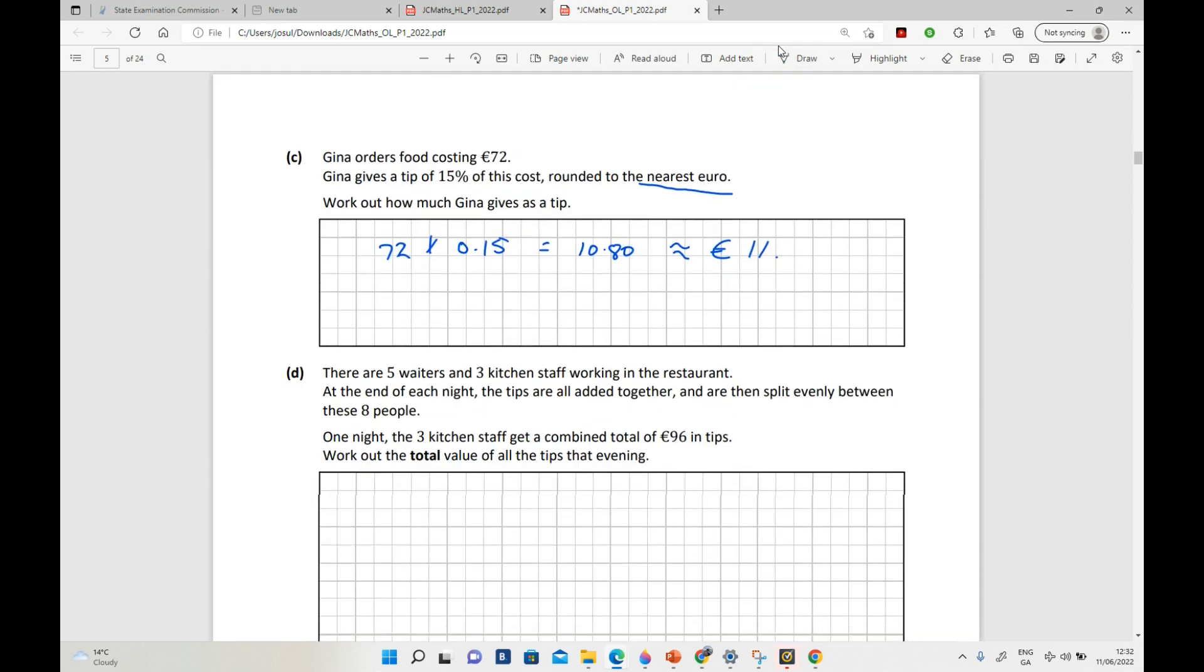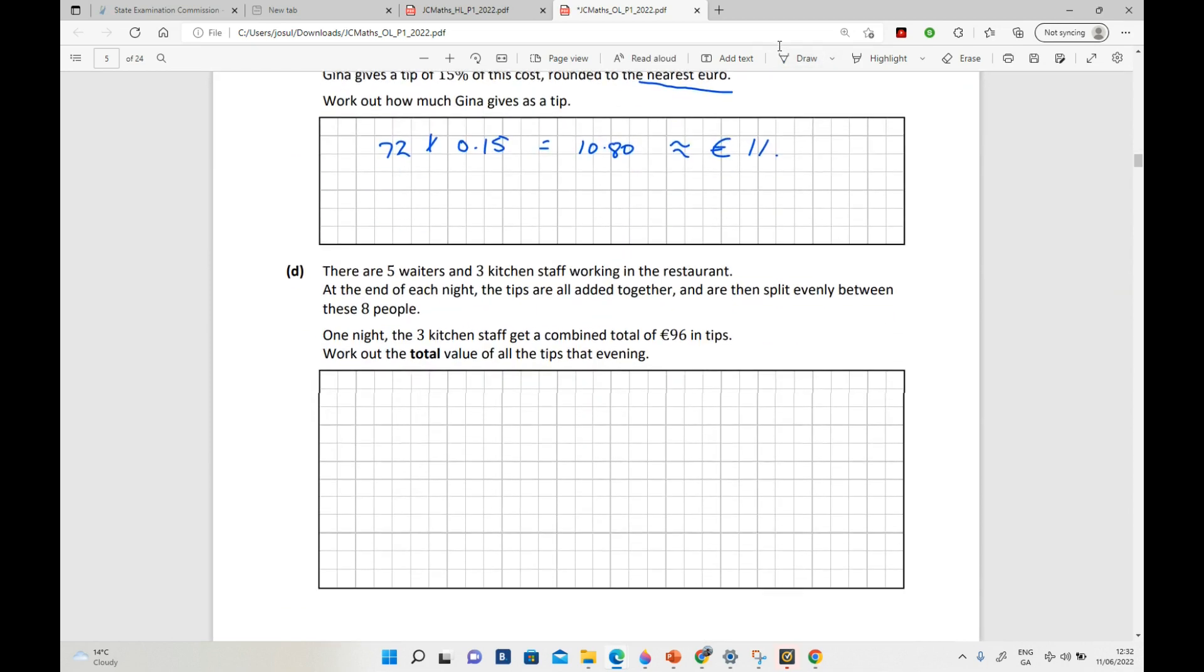So there is your answer. Right, now the next one: there's five waiters and three kitchen staff working in the restaurant. At the end of each night the tips are added all together and then split evenly between the eight people. So one night the three kitchen staff get a combined total of 96 in tips.